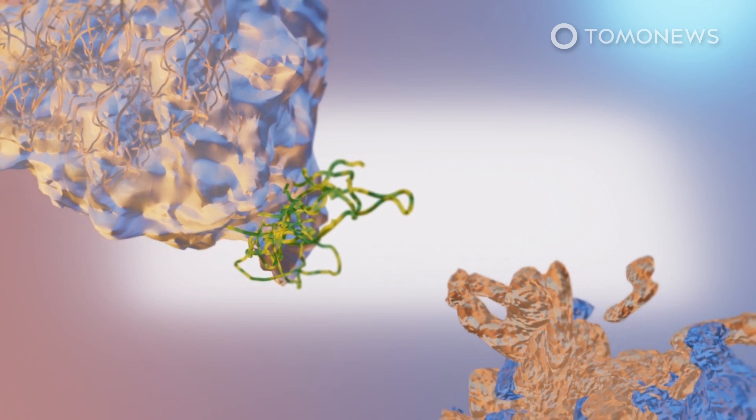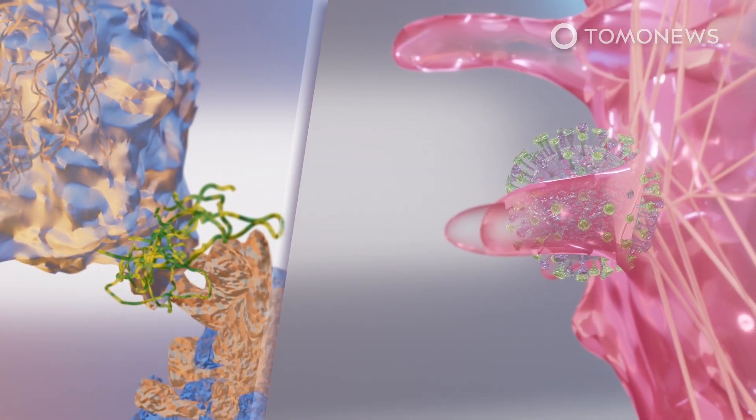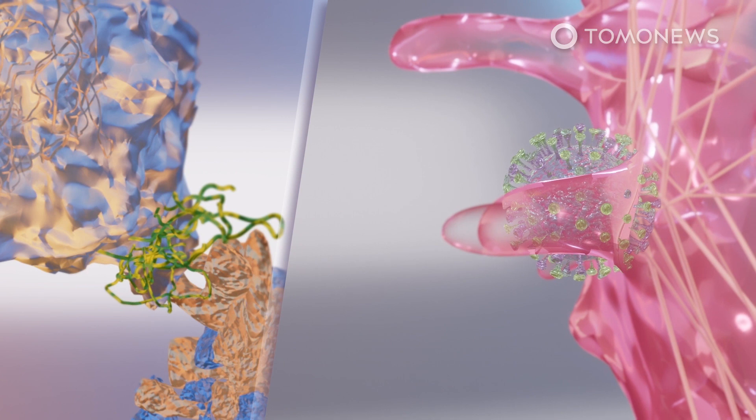The virus targets a human ACE2 receptor that has bonded with an amino acid transporter. This subtype of ACE2 structure has never been discovered before.